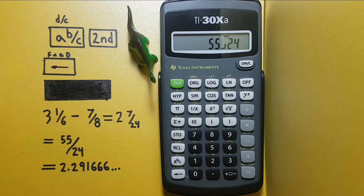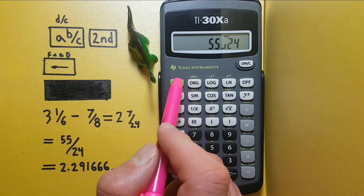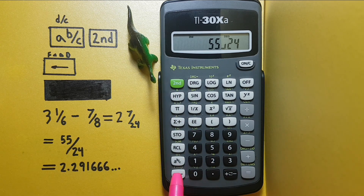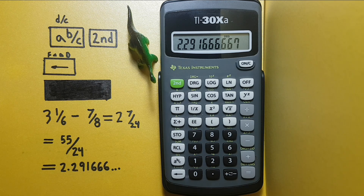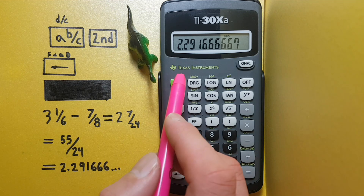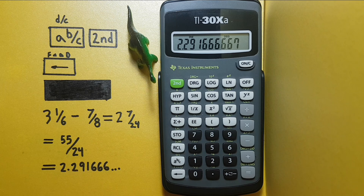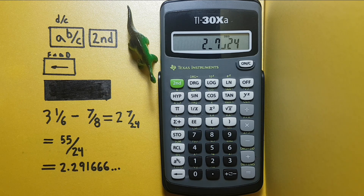But what if we want this in a decimal? We would hit second function, then the arrow key, and we see the result in a decimal. If we wish to convert this back to a fraction, we would again do second function, left arrow, and we're back to our fraction. I hope this helps and good luck on those tests.